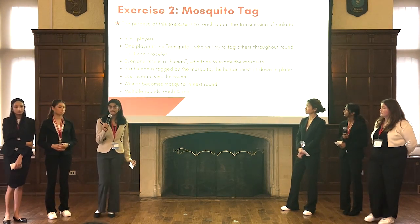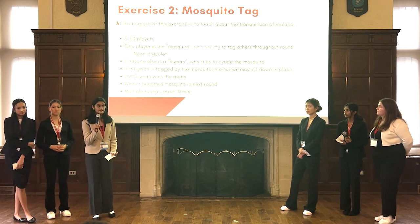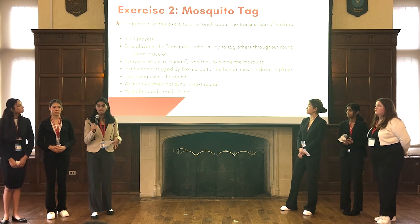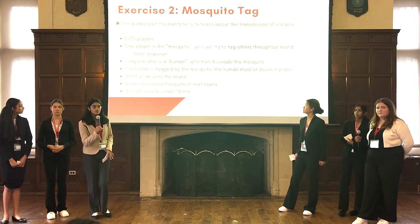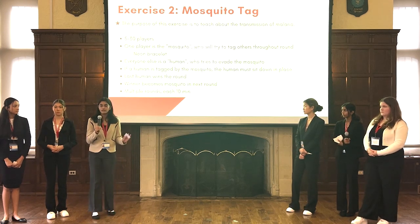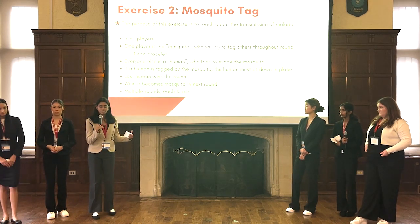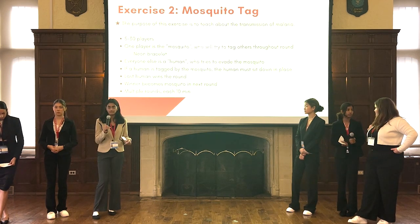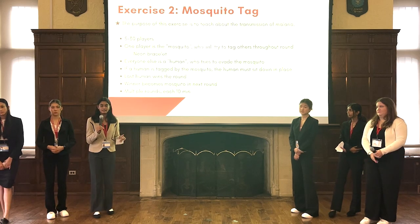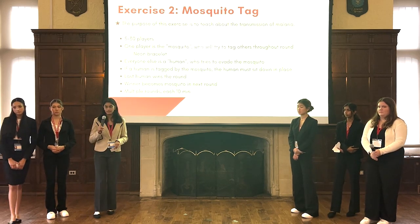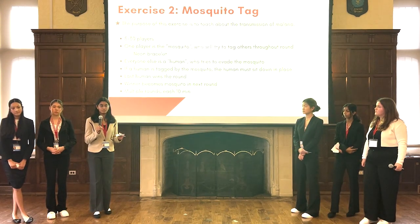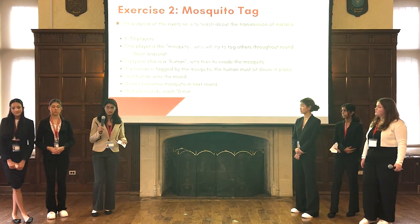The second game we're going to play is called Mosquito Tag. It's basically tag, but adapted to inform children on the transmission of malaria. Someone will be chosen as a mosquito and will wear a neon bracelet. With this bracelet, they run around and tag the other kids until there is one kid left. That kid becomes the mosquito in the next round. We will do multiple rounds, and the games will last around 10 minutes.